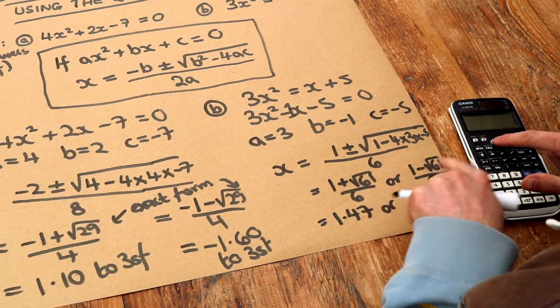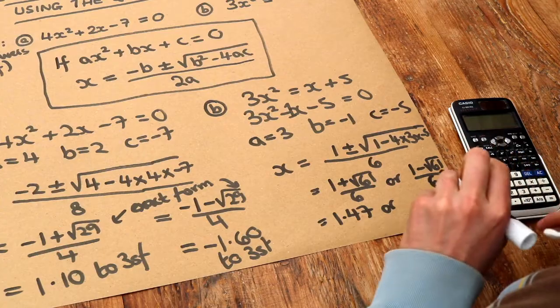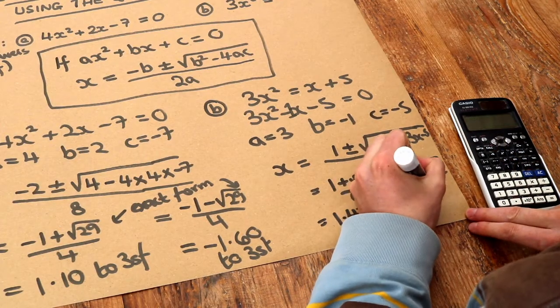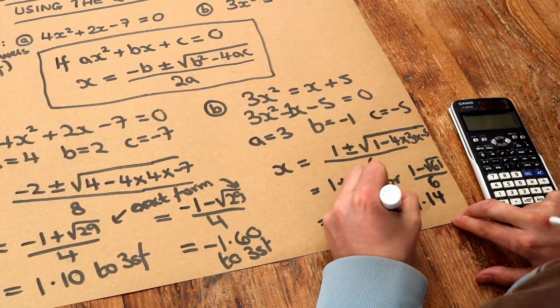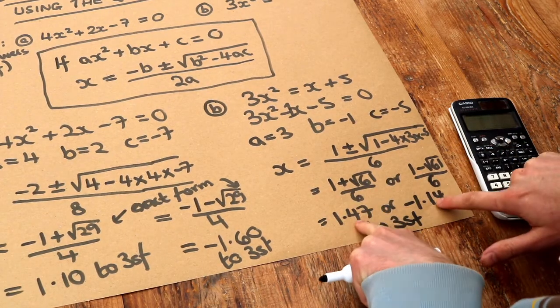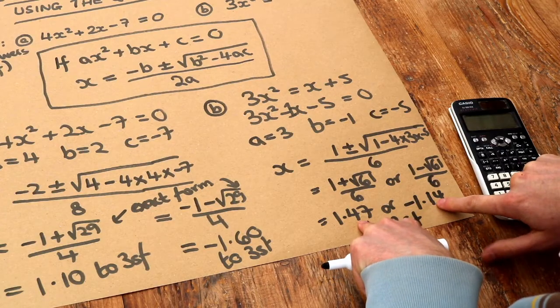Or if I turn that into a minus at the top, so that plus becomes a minus instead, then I get minus 1.14 to 3 significant figures. And those are the final answers both in exact form and in numeric or decimal form.